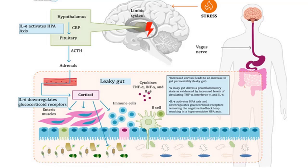But during stressful conditions, there is hyperactivation of the HPA axis and the negative feedback mechanism gets impaired. So there is increased concentration of cortisol in the blood, which starts acting on enteric muscles, gut immune cells and gut microbiota, and increases gut permeability — referred to as leaky gut — which is usually seen in irritable bowel syndrome. Leaky gut is where the luminal epithelial barrier is disturbed and epithelium is exposed to the luminal contents, which increases immune response. As a result, pro-inflammatory markers such as tumor necrosis factor alpha, gamma interferon and interleukin-6 are increased.